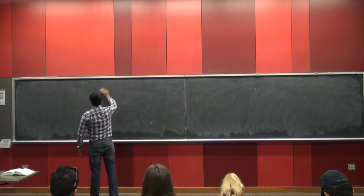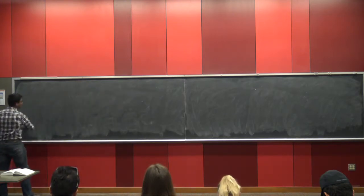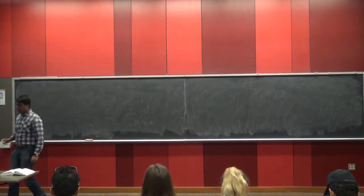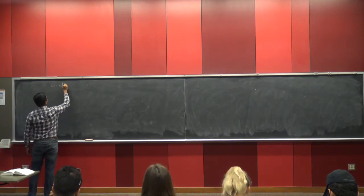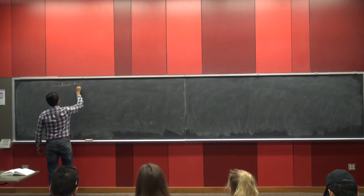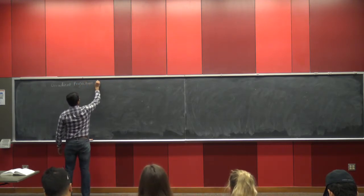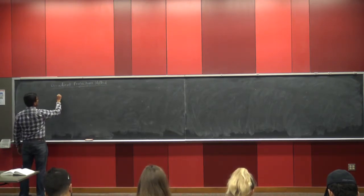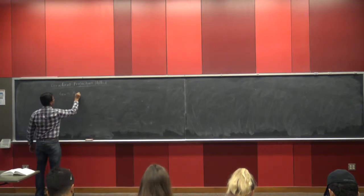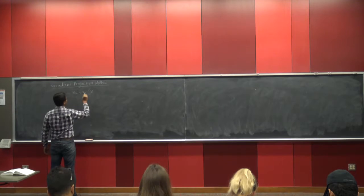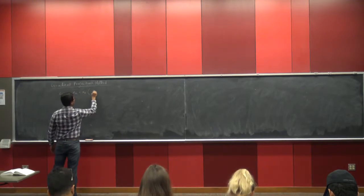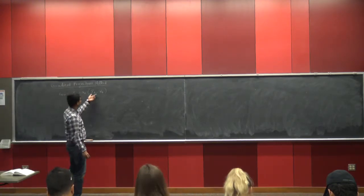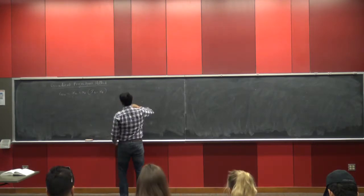We'll talk about the gradient projection method, a very important method for constrained optimization. I want to write the iteration again: x_{k+1} = x_k + α_k (x̄_k − x_k), where x̄_k is the new point. So how do you get the feasible direction?